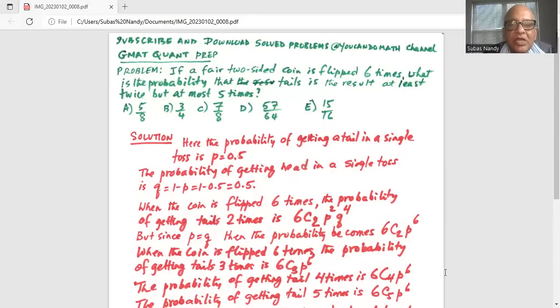Here the probability of getting a tail in a single toss is small p, probability of success is 0.5. The probability of getting a head in a single toss is Q or probability of failure is one minus small p is one minus 0.5 is also 0.5.